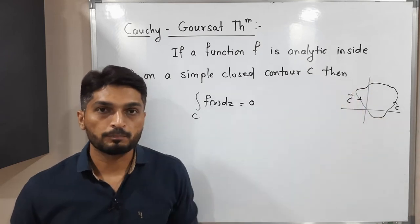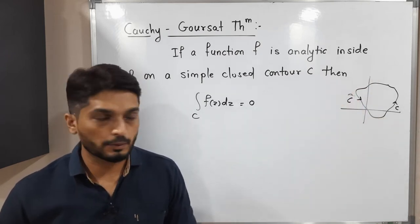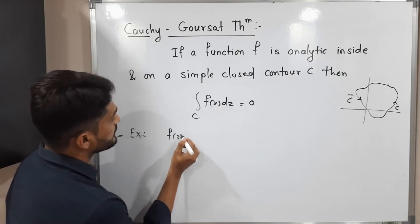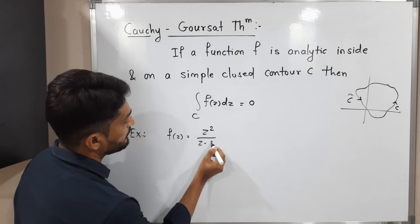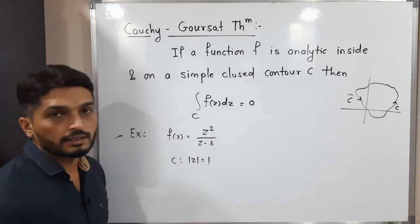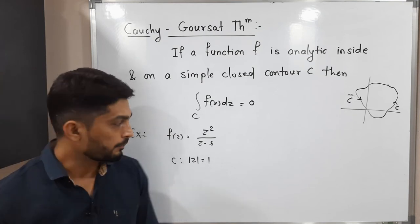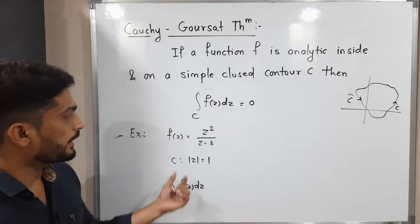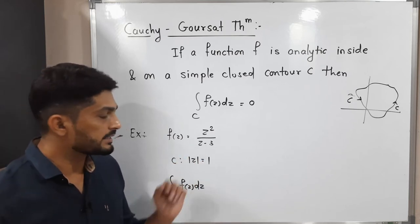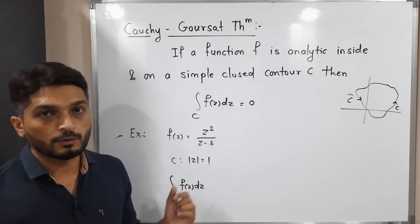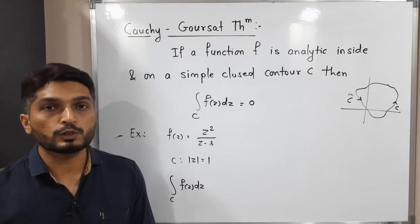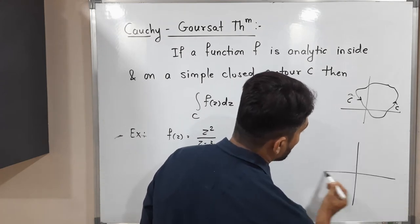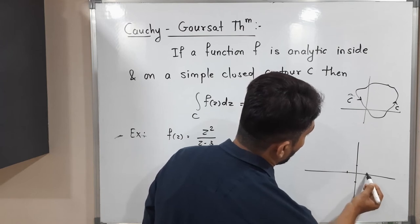Let us discuss one example to understand this concept. Consider the function f(z) = z² / (z - 3), and C is a circle with center (0, 0) and radius 1. We have to find the value of the integral of f(z) dz over C, where the closed curve C is |z| = 1, which is the unit circle. Let me draw this circle with center (0, 0) and radius 1.